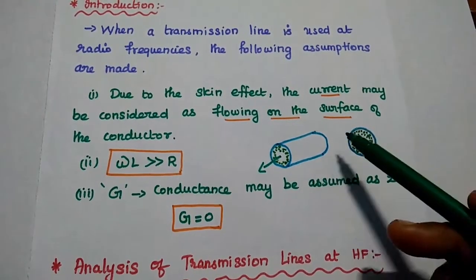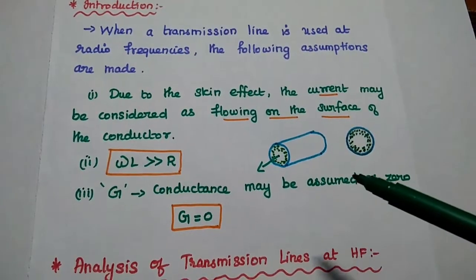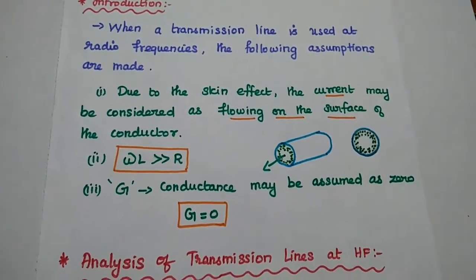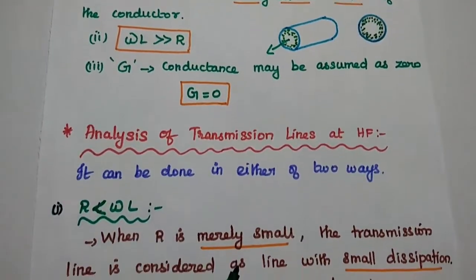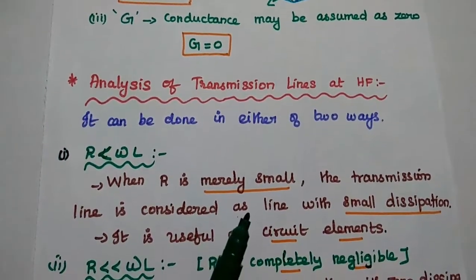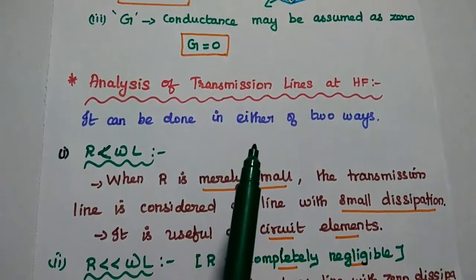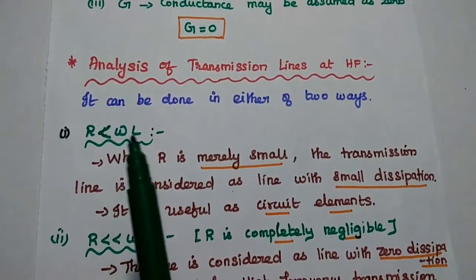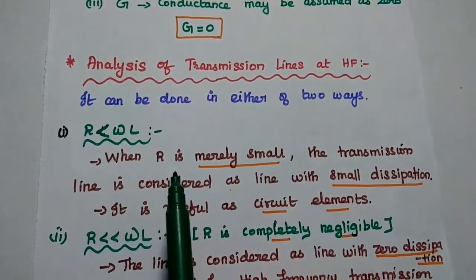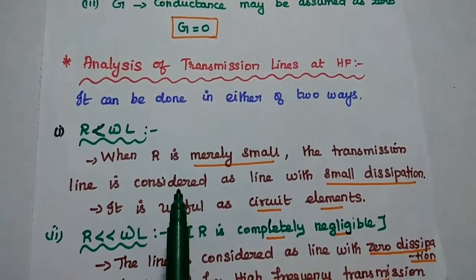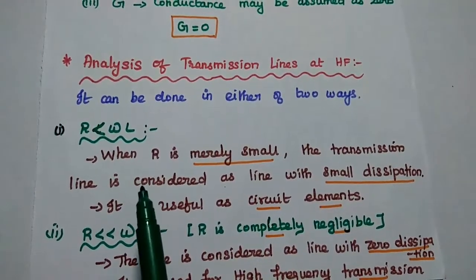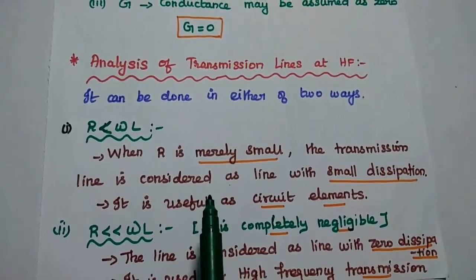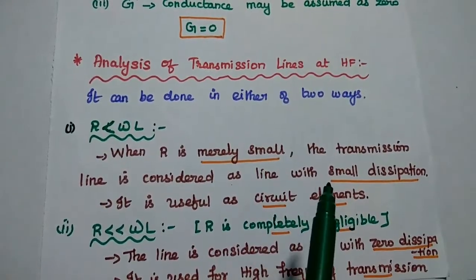These three conditions or assumptions are very important to analyze the transmission lines at very high frequency range. Next, we are going to analyze the transmission line parameters at high frequency range. The analysis can be done in either of two ways. The first one is if the resistance is smaller than omega L — smaller than means it is merely smaller, not a negligible value. We can consider a reasonable smaller value of resistance. In this case, the transmission line is considered as the line with small dissipation.